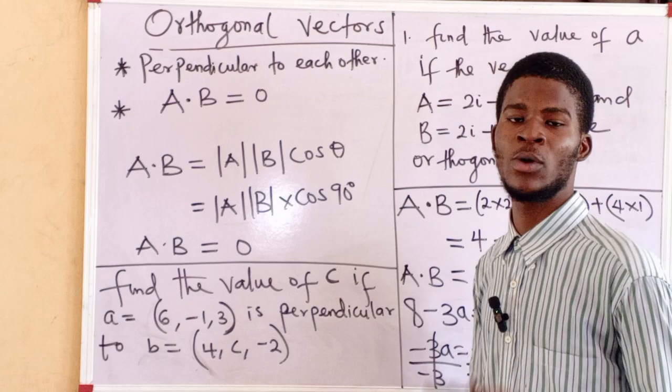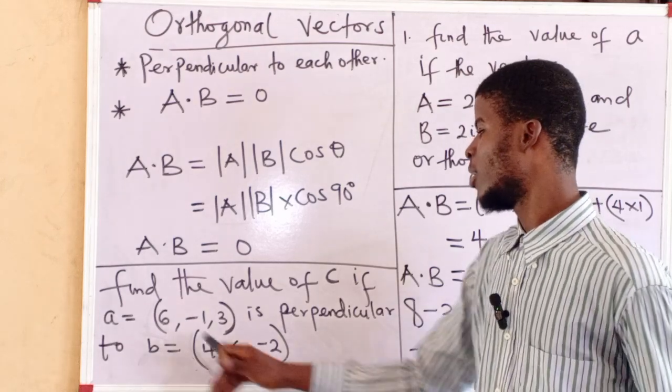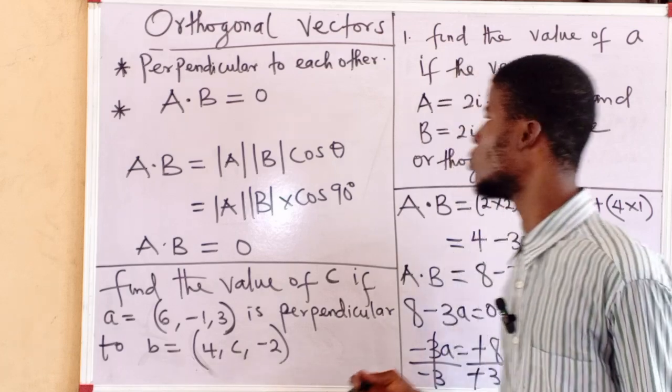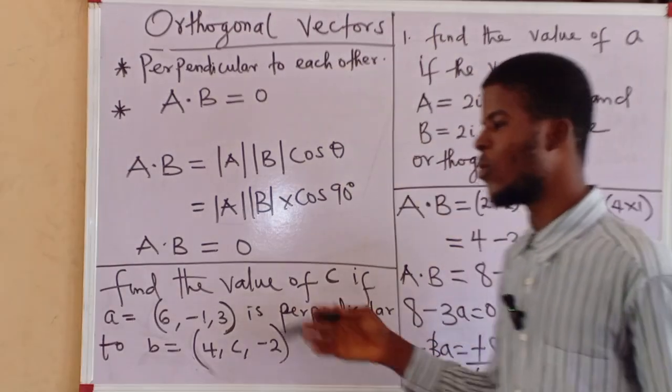If A equal to this is perpendicular to B equal to this, remember the principle. For perpendicularity of two vectors, the dot product equals zero. Well, we can see that the vectors are in bracket form. We can easily convert them to component form. So, work it out.